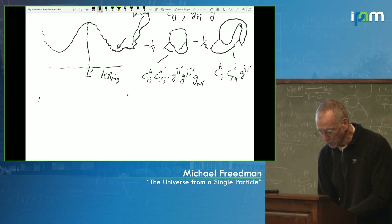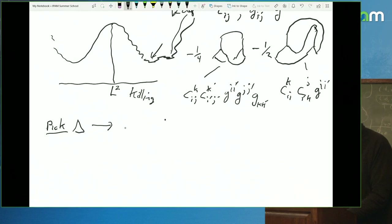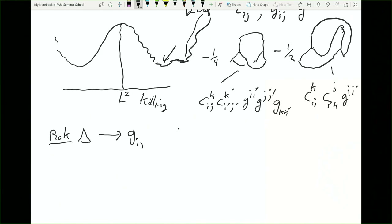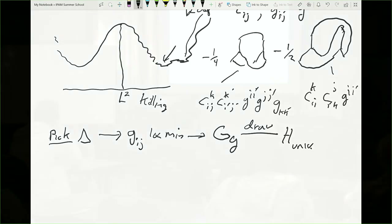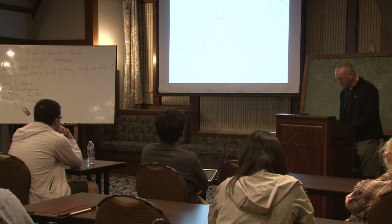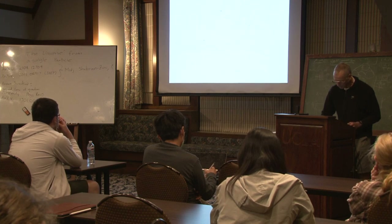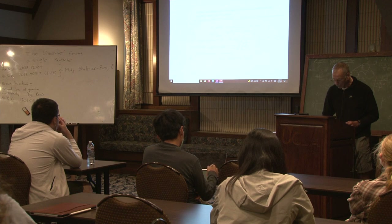Let me just remind you of the sequence of events. First we pick a delta — a functional on metrics. Then from that we get to a minimum: we find a G_ij which is a local minimum. Then from that we create a probability distribution — the Gaussian based on that metric. Then we sample, drawing from that probability distribution, and that's how we get our Hamiltonian. That's the proposal, in this toy model, for the universe's Hamiltonian. Now let me pull up the PowerPoint.